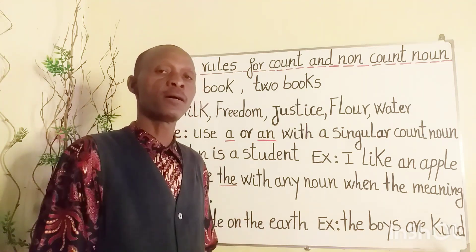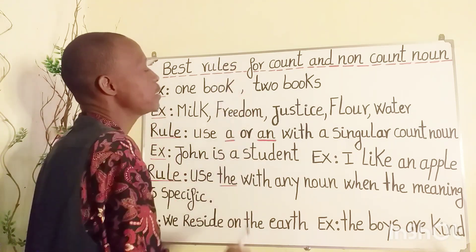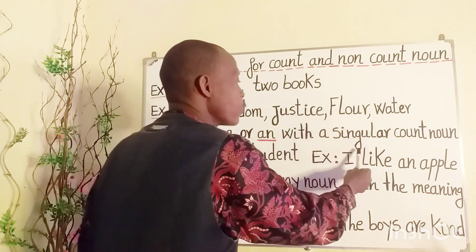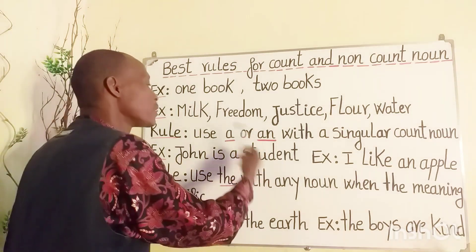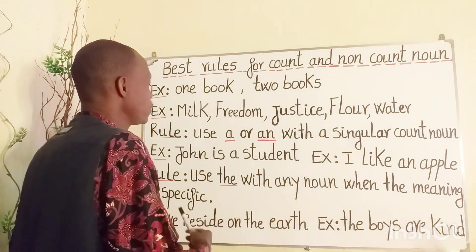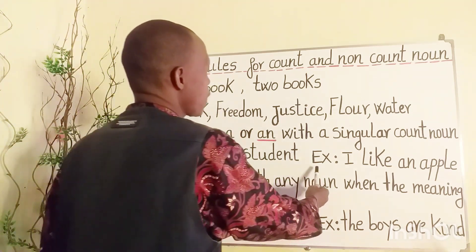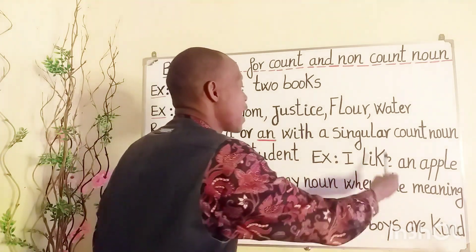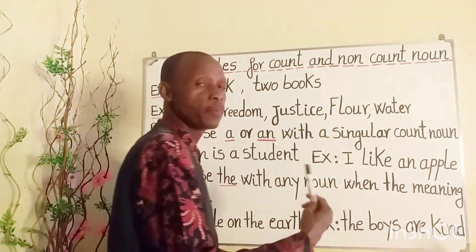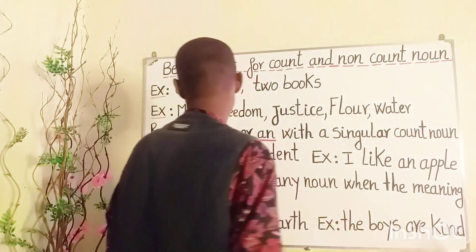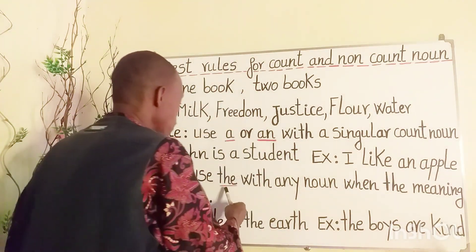Rule number one: use the article 'a' or 'an' with a singular count noun. Examples: 'John is a student.' As you can notice, we use the article 'a' before a consonant. Example two: 'I like an apple.' As you can also notice, we use the article 'an' before a vowel.